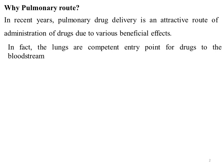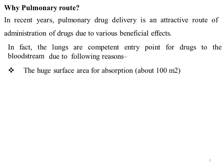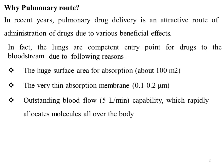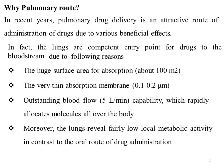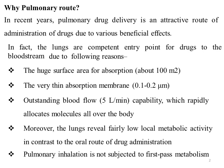In fact, lungs are a competent entry point for drugs to the bloodstream due to various reasons. Number one, due to the large surface area of absorption — about 100 m² in adult humans — it is beneficial for drug absorption. The very thin absorption membrane which the drug has to cross is only 0.1 to 0.2 micrometers, and the blood flow is very high at 5 liters per minute, which rapidly helps to distribute molecules all over the body. Moreover, the lung reveals fairly low local metabolic activity in contrast to other routes, and pulmonary inhalation is not subjected to first-pass metabolism as in oral drug delivery.